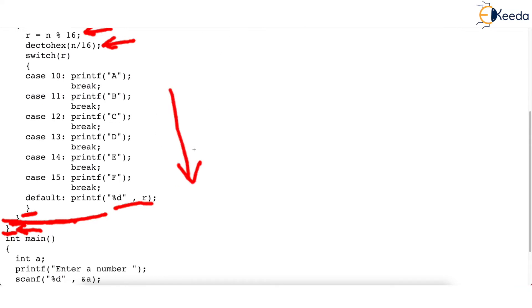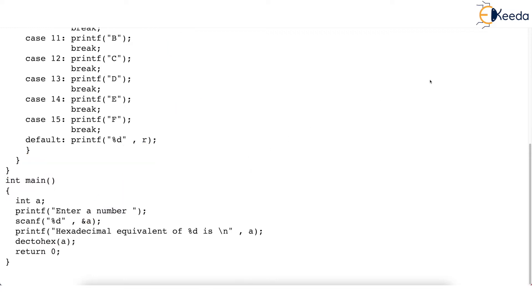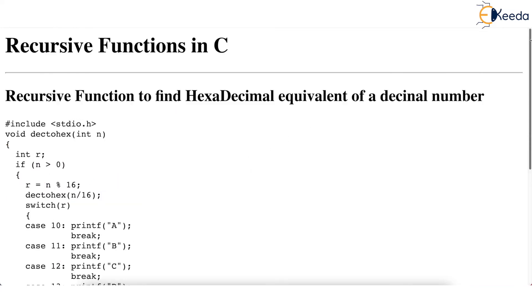Main declares a number, asks the user to input a number — say 160 — and then makes the dec_to_hex call, which will print A0 on the screen. That's how you convert decimal to hex and write a recursive function. Thank you very much.